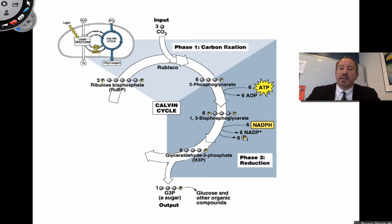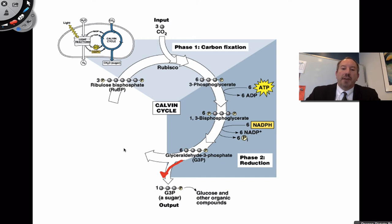This three-carbon fragment, GAP, is the true end product of photosynthesis. Of the six GAP molecules produced, one of them leaves the cycle. That leaves five, and you then have five three-carbon molecules — 15 carbons total — that need to be rearranged to regenerate the RuBP.